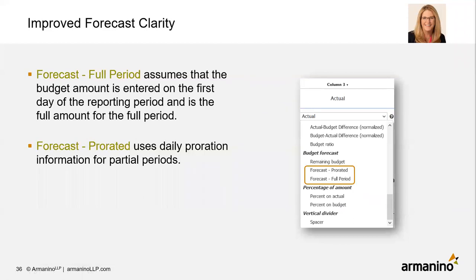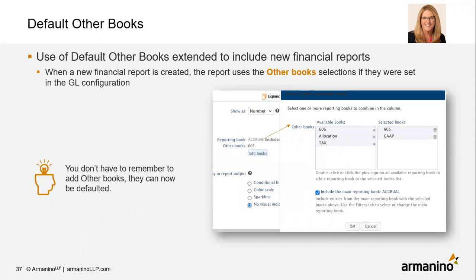For forecasts, previously the only forecast column was 'prorated,' which used daily proration for partial periods — so pulling on the 10th of the month would use actuals for the first 10 days and prorated budget for the last 20. Now you can add a 'forecast full period' column, which assumes the budget amount is entered on the first day of the reporting period. Also, the use of default other books — extended last release — is now extended to include new financial reports, so if you're using any other books, you can apply them consistently.